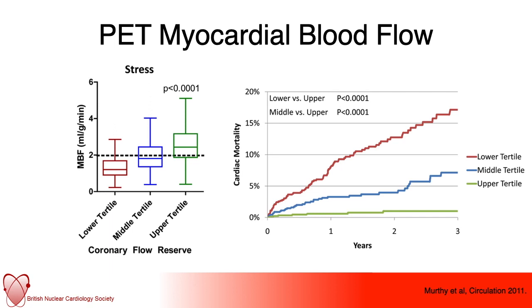Thinking about what PET perfusion can bring to the table in terms of myocardial blood flow quantification and prognostication: dividing coronary flow reserve into tertiles, the lowest tertile performs much worse. In 2,780 patients referred for PET and followed up over about 1.4 years, those in the lowest tertile of coronary flow reserve — defined as less than 1.5 ml per gram per minute — had a 5.6-fold higher risk of death compared to the highest tertile, shown as the green line.